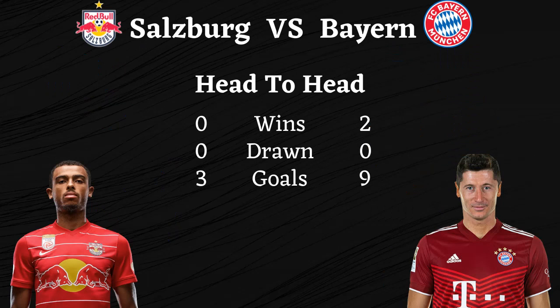Now we can see the round of 16 matches. First up: Salzburg vs Bayern. Head to head — Bayern has won 2 matches, zero draws. Goals scored: Salzburg 3, Bayern 9. Bayern has won 6 Champions League titles, and Salzburg has 0.